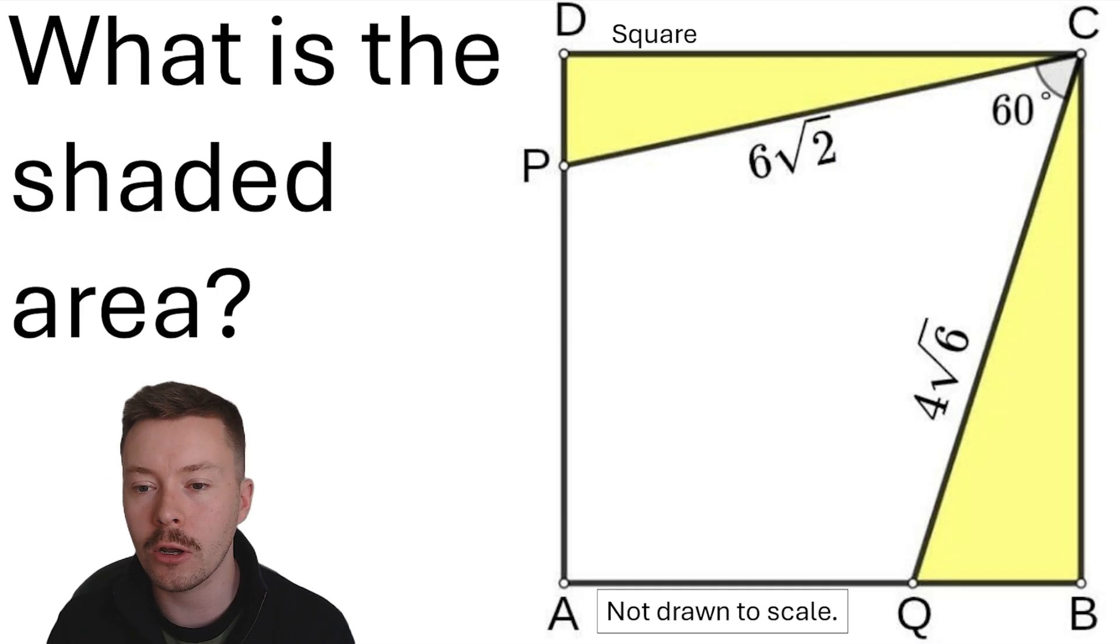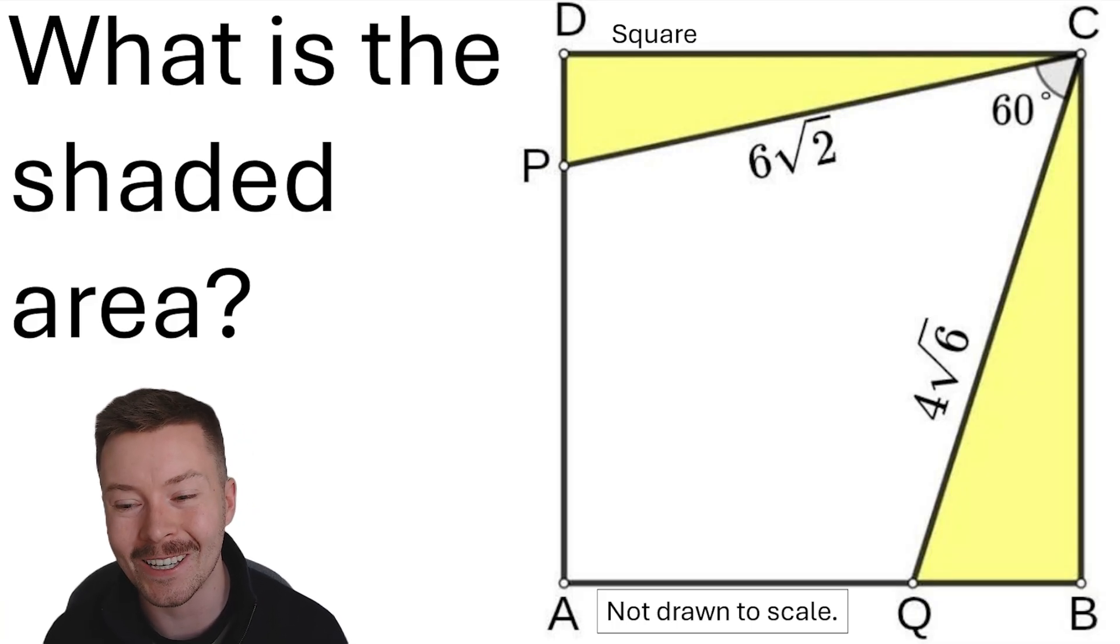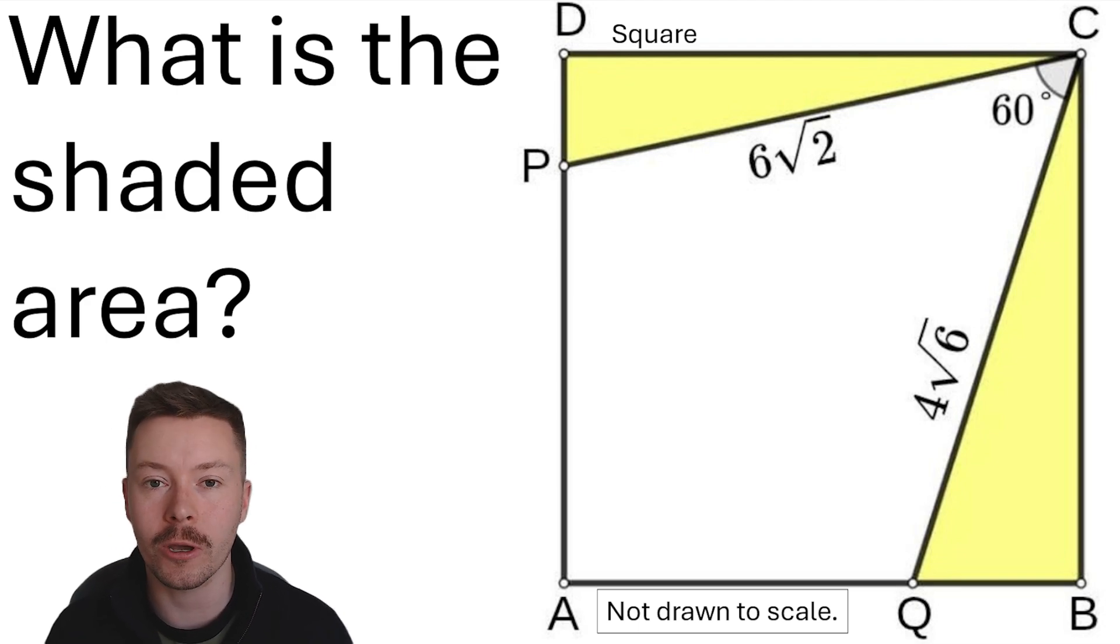We've got a line P to C of length 6 root 2. We have a line of C to Q of length 4 root 6, and an angle between those two line segments of 60 degrees. Can you work out the shaded area, which is the combined area of those two triangles?